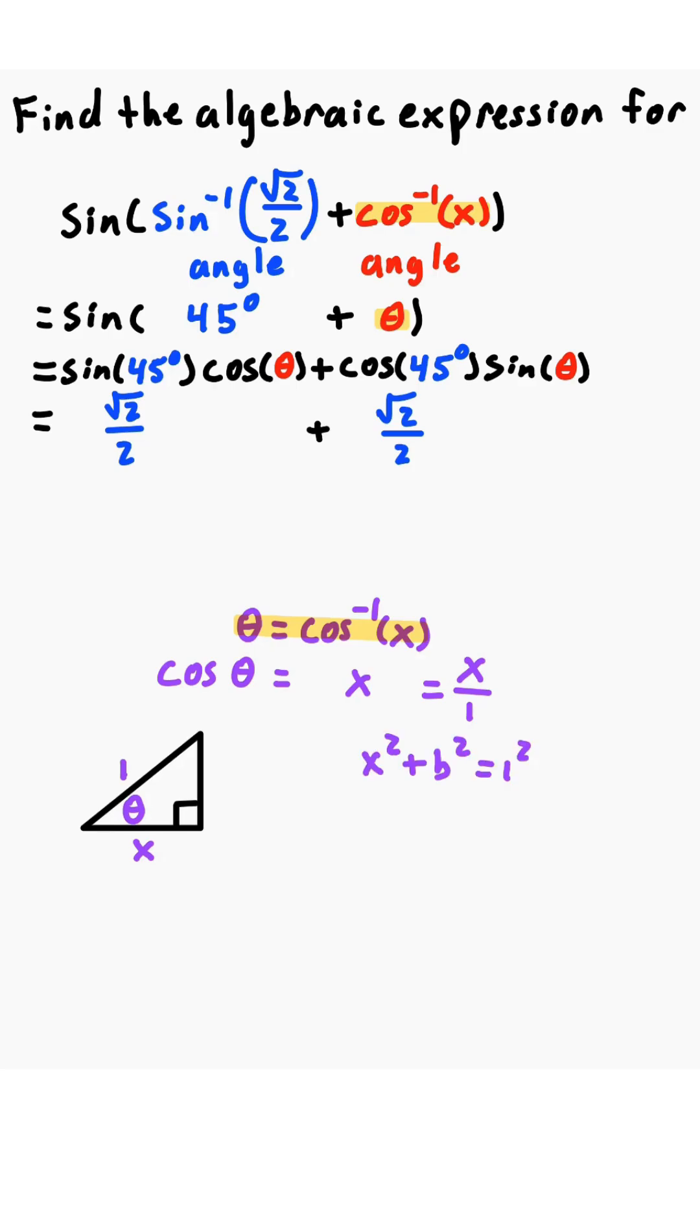We just need the opposite side. So by the Pythagorean theorem, x squared plus b squared equals 1 squared. So b squared is equal to 1 minus x squared, or b is equal to the square root of 1 minus x squared. So the opposite side is the square root of 1 minus x squared.